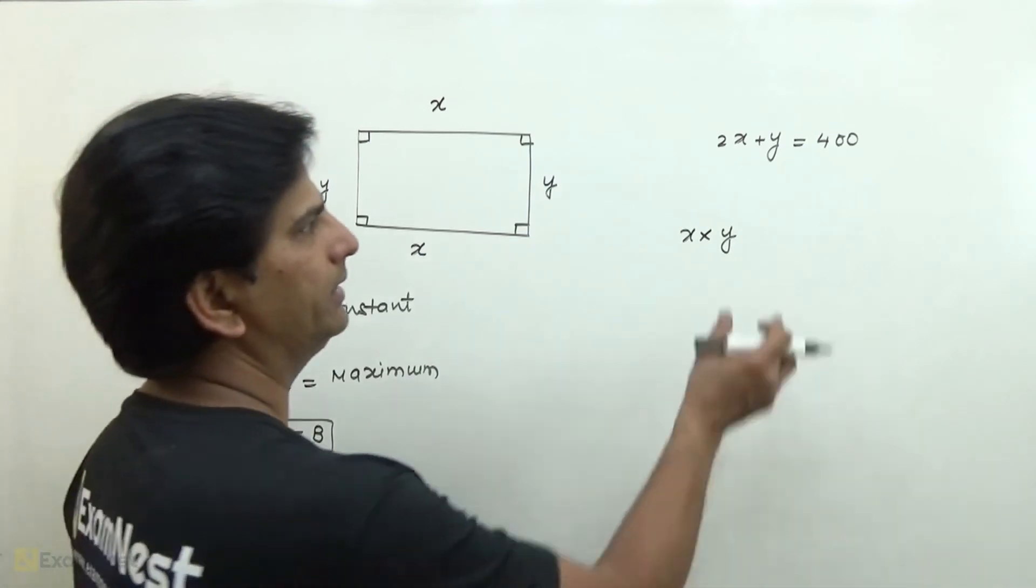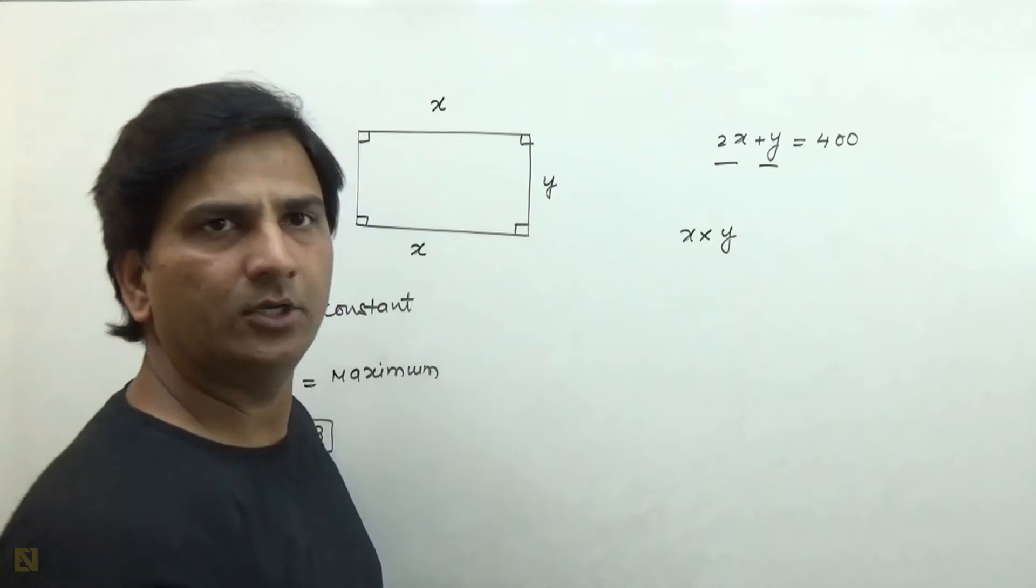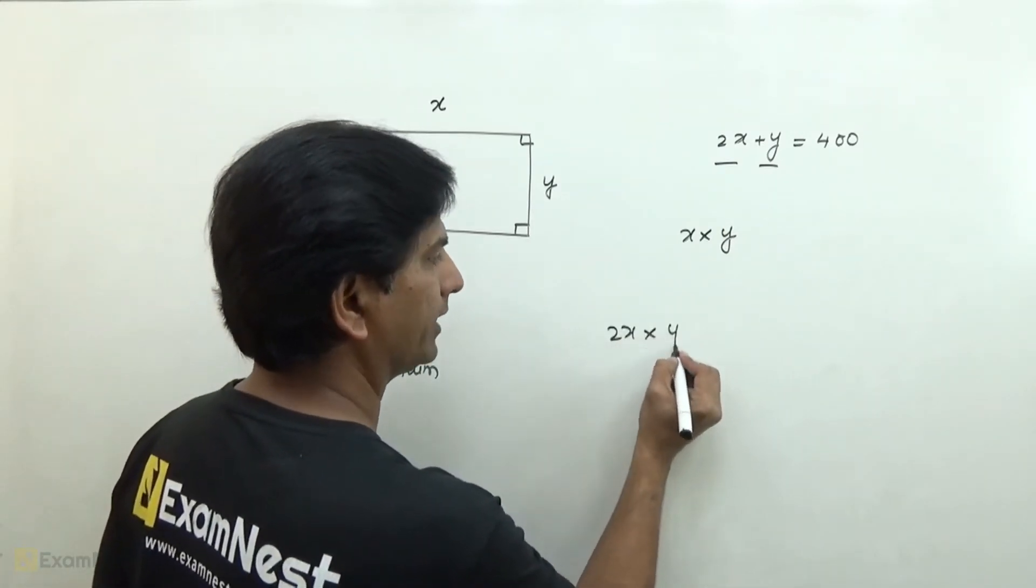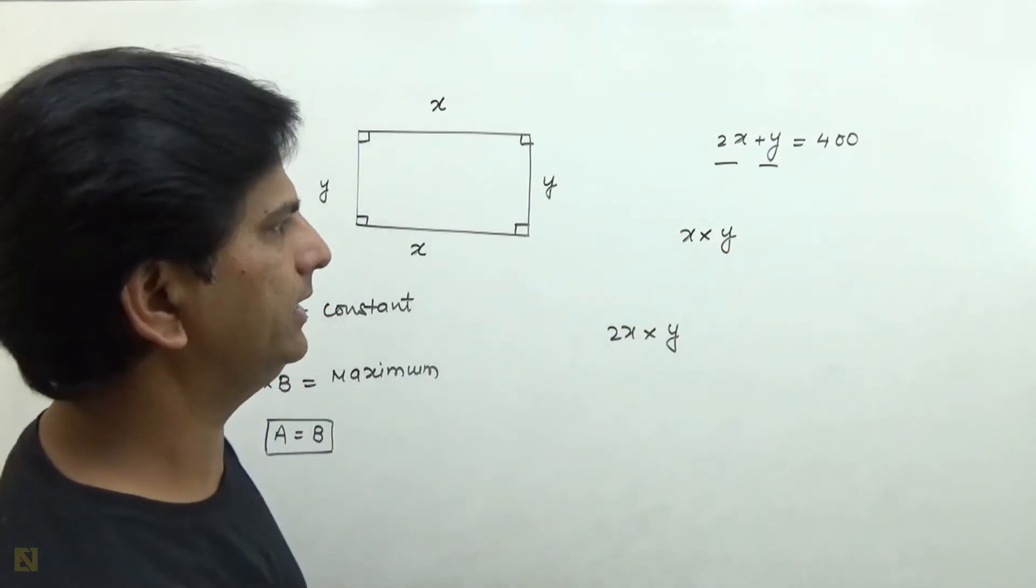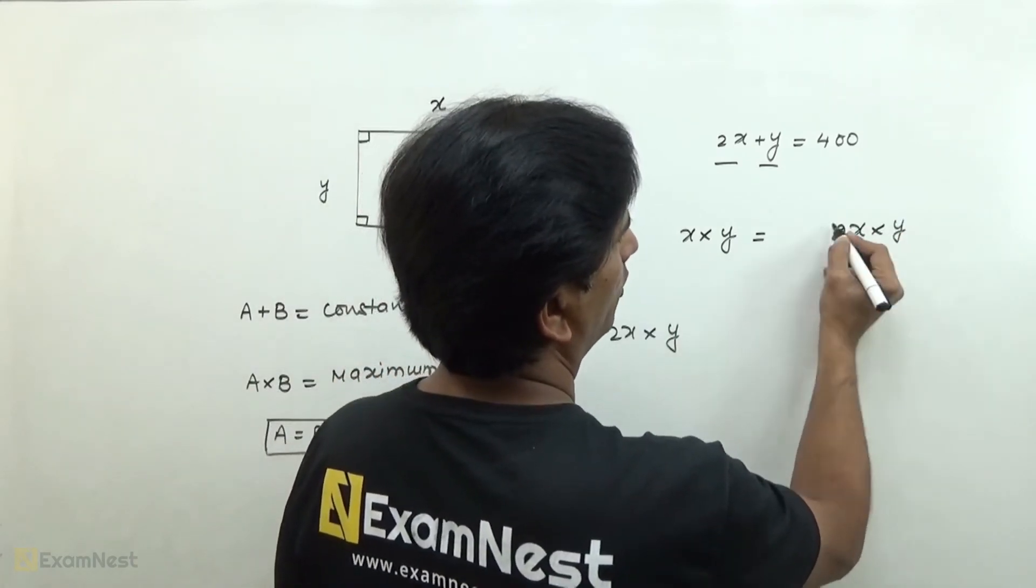Here, 2x plus y is constant. So their product should be 2x into y. We have to find x into y, so we consider 2x into y as the product to maximize.